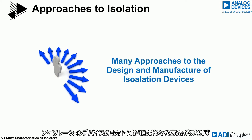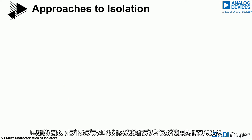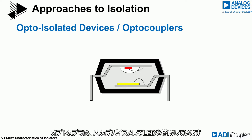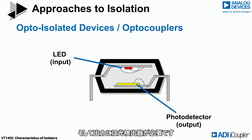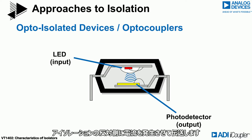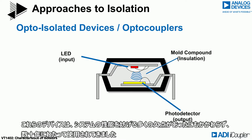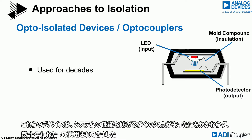There are many ways to design and manufacture isolation devices. Historically, opto-isolated devices, also known as optocouplers, were used. An optocoupler contains an LED as the input device and a photodetector at the output. Data is transmitted by biasing the LED, which produces a current on the other side of the isolation. The opaque mold compound separating the LED and detector provides the insulation. These devices were used for decades, even though there were many parametric drawbacks that hindered system performance.